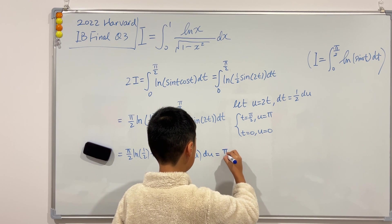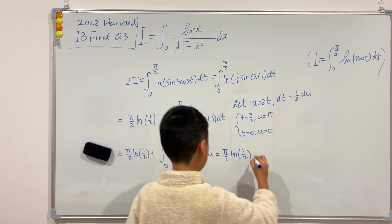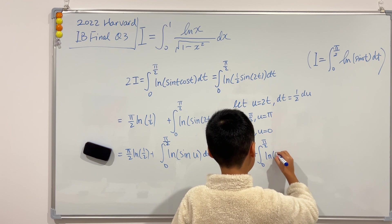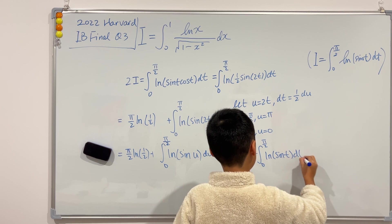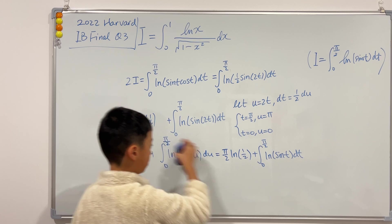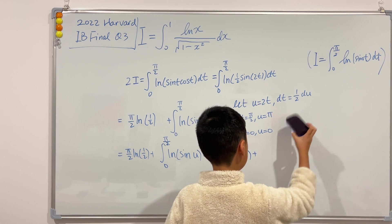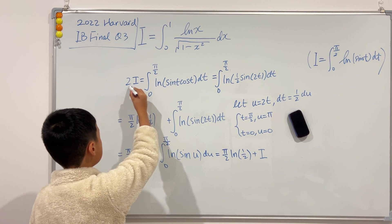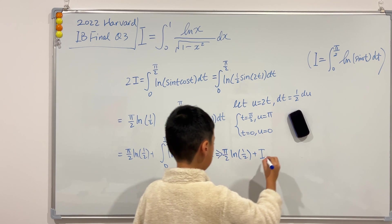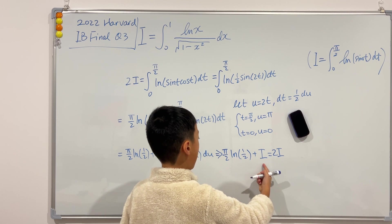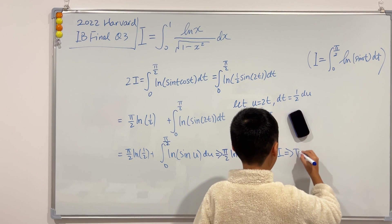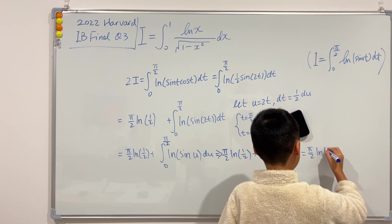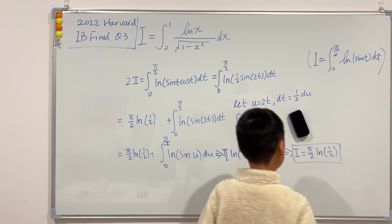Then this becomes π over 2 ln of 1 over 2 plus the integral from 0 to π over 2 of ln of sine t. And like I said, this is now i, so we can just replace this with an i. And look, we know that 2i is equal to all of this. So this is equal to 2i. If we move the i to the right-hand side, then we can find that i is just π over 2 times ln of 1 over 2.